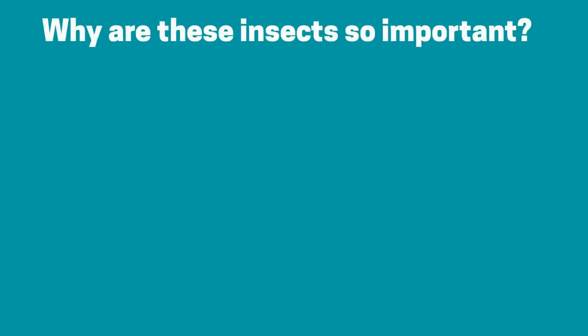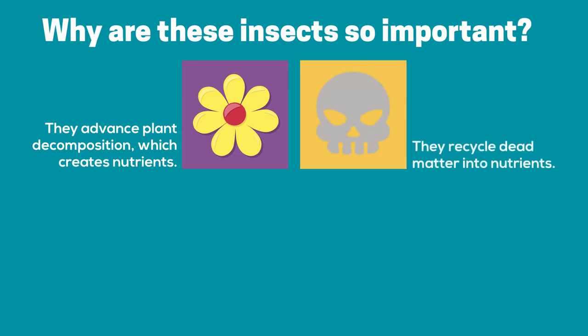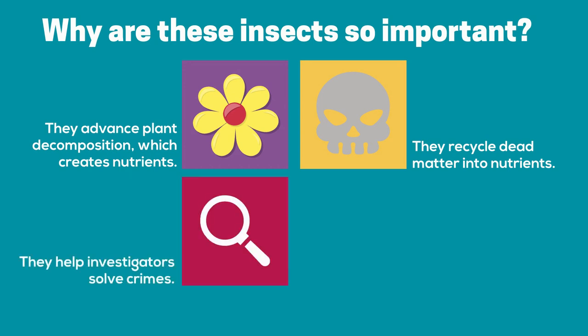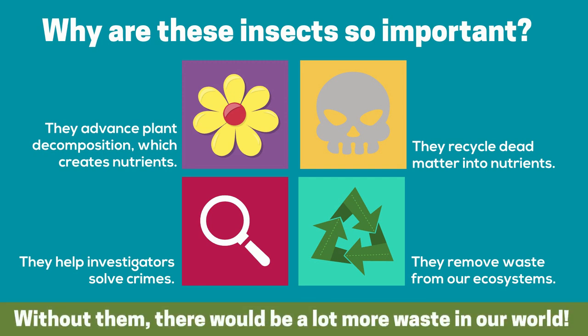So, why are these insects so important? Let's review some of their many uses. First, by tearing into plants, they advance plant decomposition and help create nutrients. They also recycle dead animal matter into nutrients by feeding on it. This can help police solve crimes as well. By eating dead plants, animals, and feces, they overall remove a ton of waste from ecosystems. Without them, there would be a lot more waste in our world.